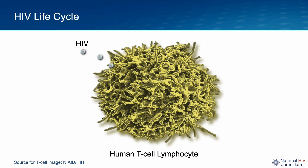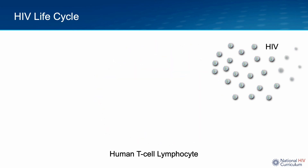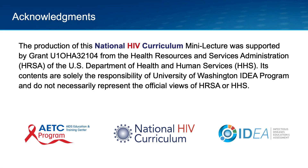Hopefully, as a result of this talk, you have an appreciation for how HIV enters a host cell and takes over the inner workings of the cell to generate new HIV particles, gradually turning the cell into a virus-making factory, eventually depleting the host cell of many of its essential elements, which results in the demise of the cell. In closing, I have examined in detail the essential steps required by HIV to produce new virions. I hope this talk has provided you with a deeper understanding of the HIV life cycle. Thank you. The production of this National HIV Curriculum Mini Lecture was supported by funding from the Health Resources and Services Administration.